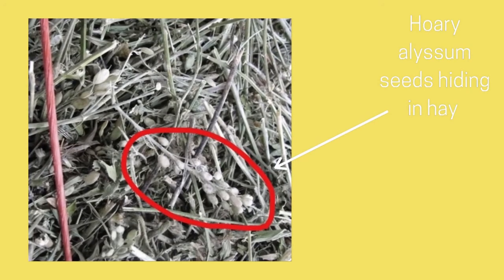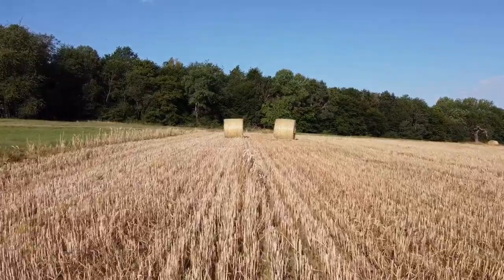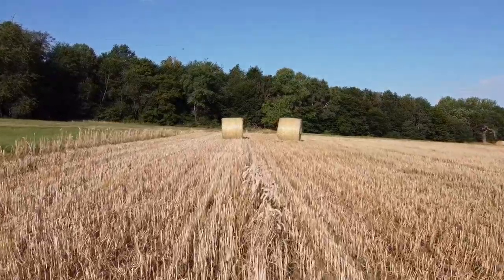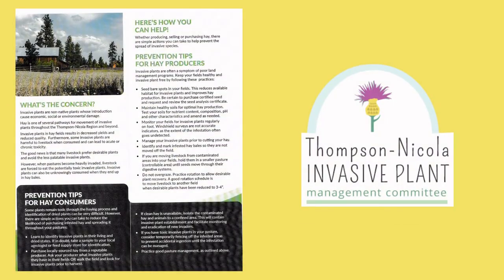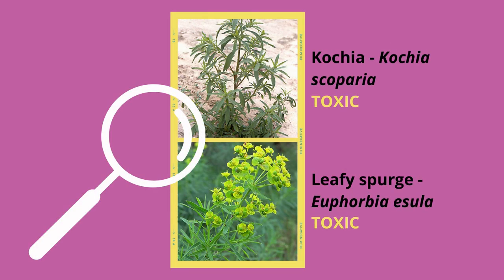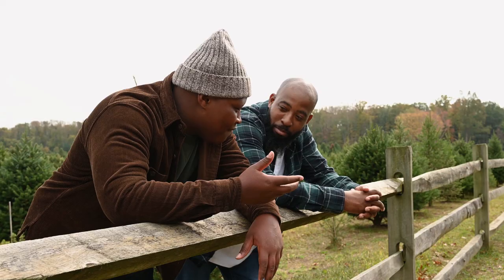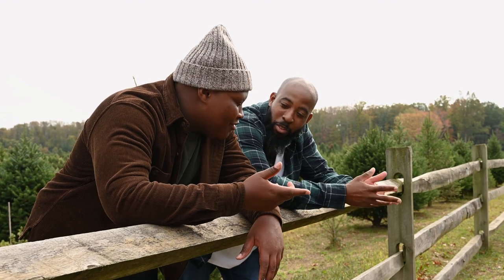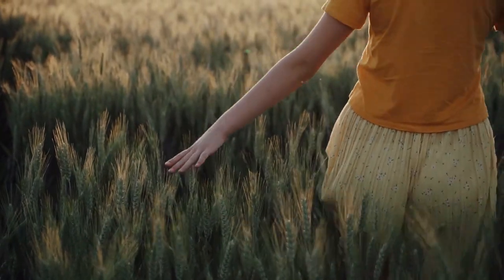The good news is that you can take simple actions that can help prevent the spread of invasive species to avoid harming your livestock and hay fields. Let's go over some of these actions that hay consumers can take. Hay consumers should learn how to identify invasive plants and know which ones are toxic. You should also purchase locally sourced hay from a credible producer. Ask your producer what invasive plants they have in their fields, or walk the field and take a look for invasives prior to harvest.